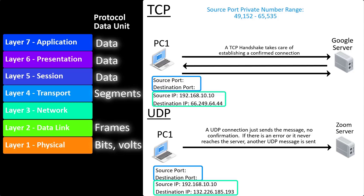They're for a private network. If you ever look at network traffic on a packet capture utility and you look at the source IP address, you will see that the source port will always be something in the range of those numbers. Your computer, when initiating a network connection, randomly selects these ports using a random number generator.